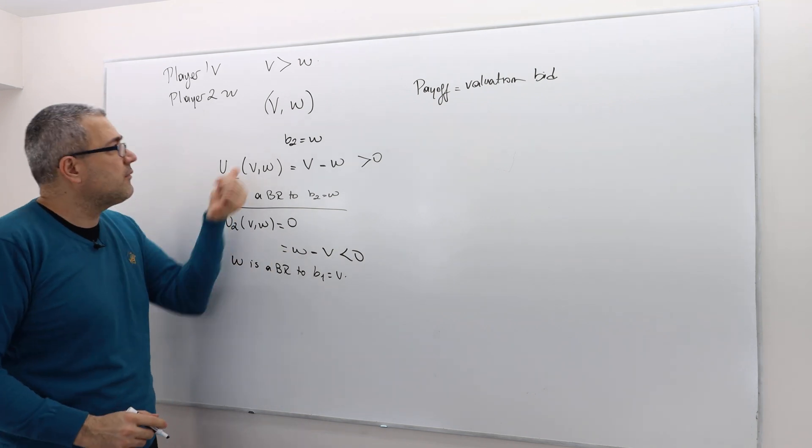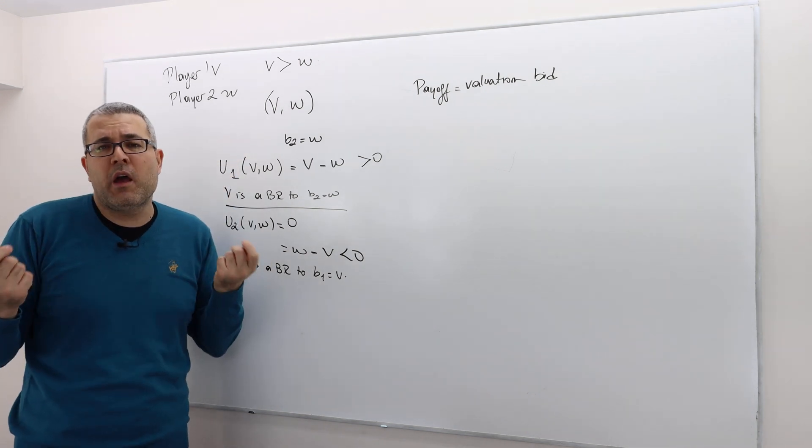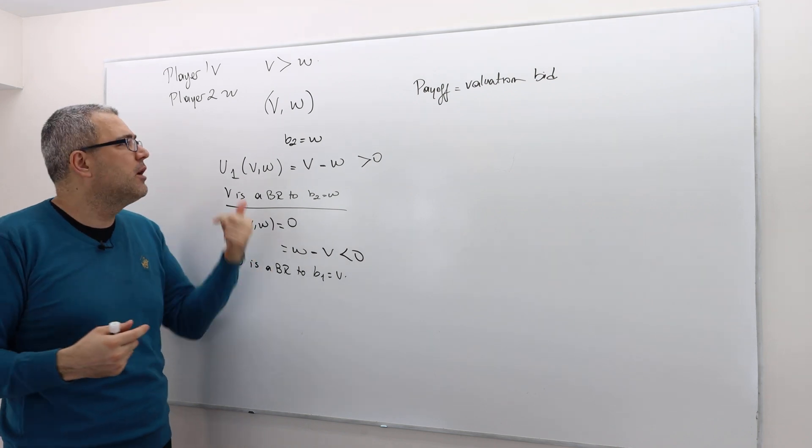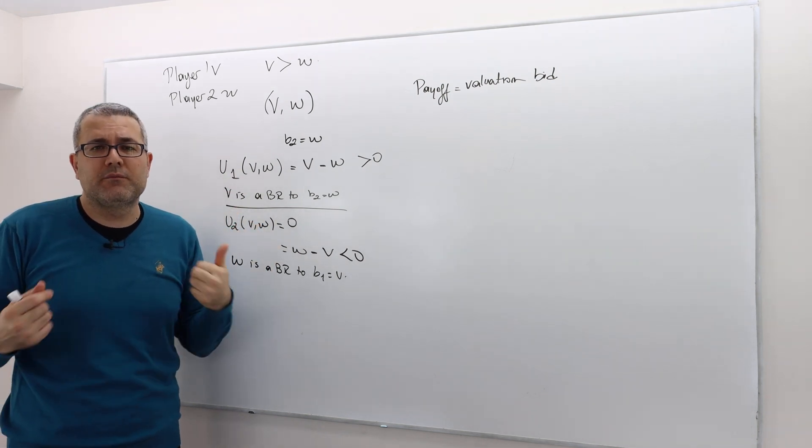Hence, VW is one of the Nash equilibrium of this game where player one wins.